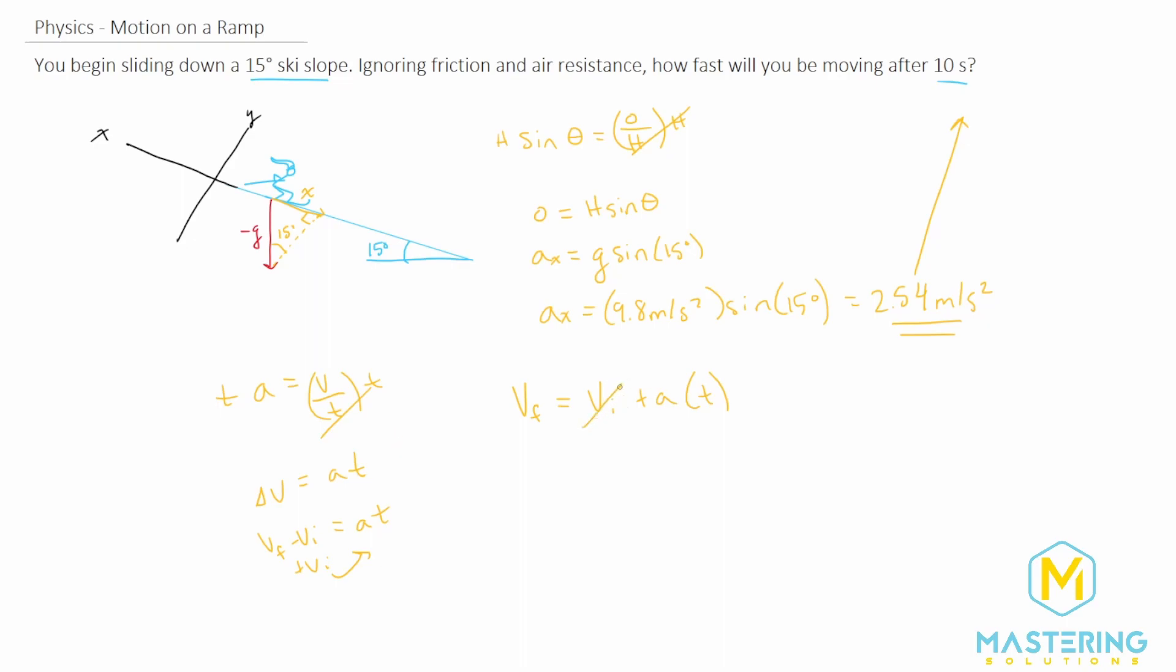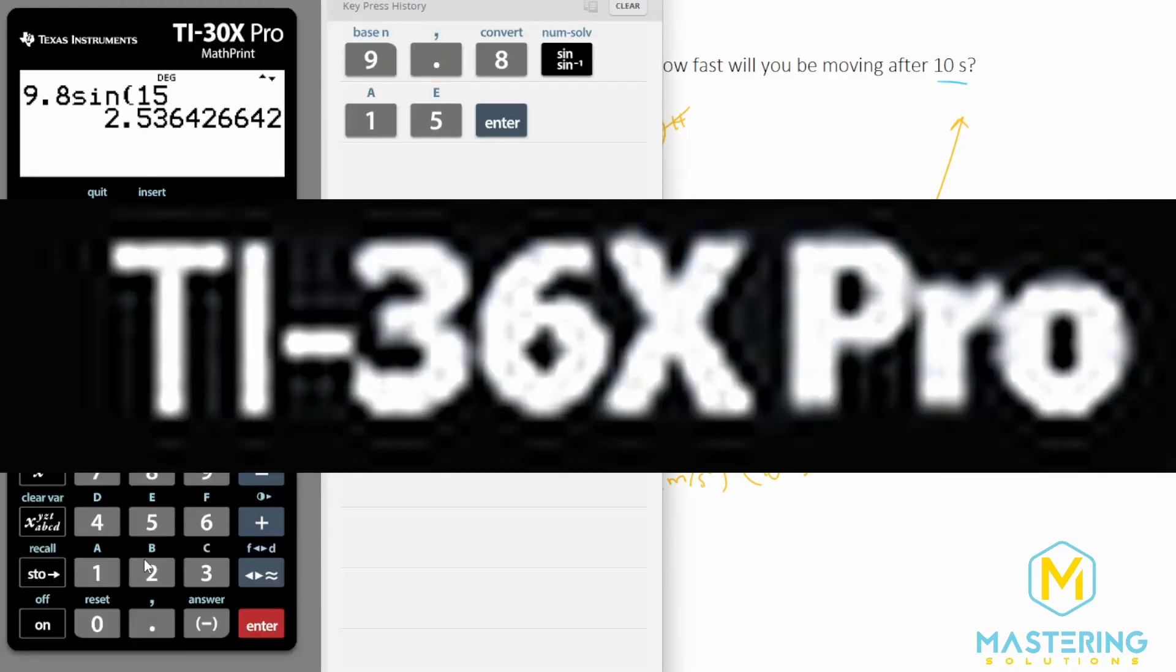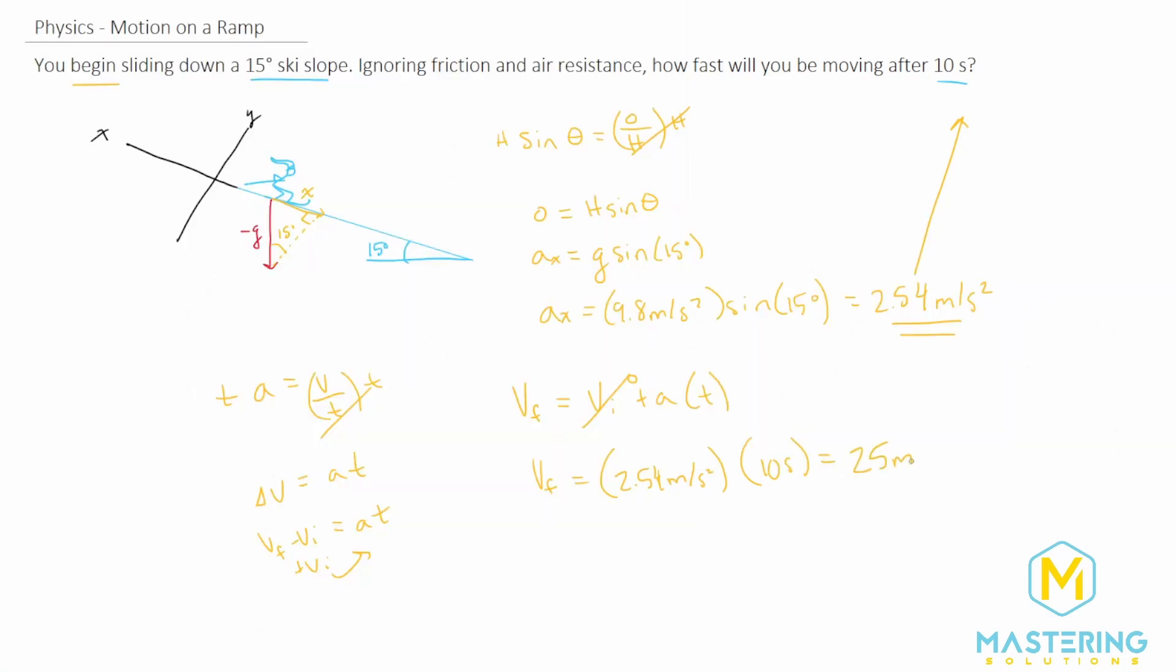The initial velocity is zero in this case, because they tell us that we begin sliding down a hill, meaning that we started at rest, and then we start to slide down the hill. So the final velocity will be equal to the acceleration that we found. So we have 2.54 meters per second squared times the time of 10 seconds. So 2.54 times 10. And we could just move the decimal place over one. So we have 25 meters, which is how far we've gone after 10 seconds gliding down a 15-degree ski slope.